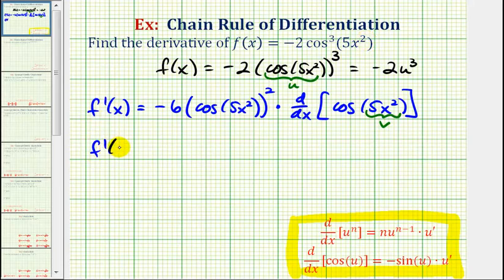So we have f prime of x equals negative six, cosine five x squared to the second, times the derivative of cosine five x squared, which we could think of as cosine v,